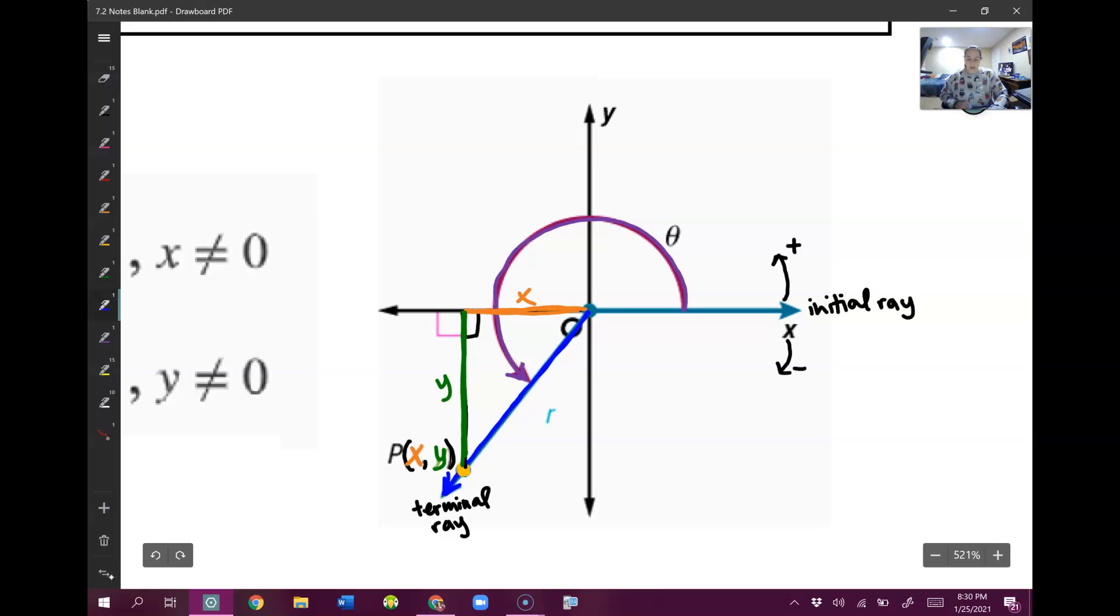Now, this hypotenuse side, this long side, they call that r. Because usually this point would go through some circle, and that point is the radius of the circle. That's kind of how we think about it. But you can just know it as r right now.